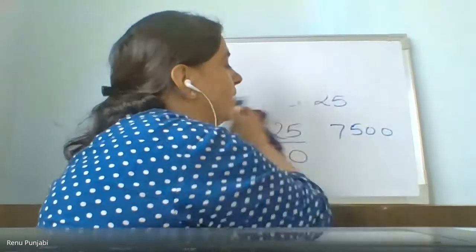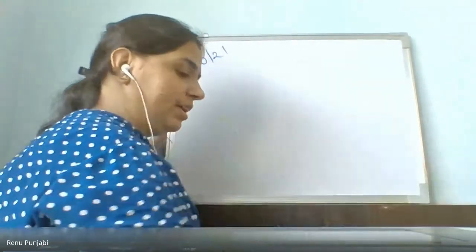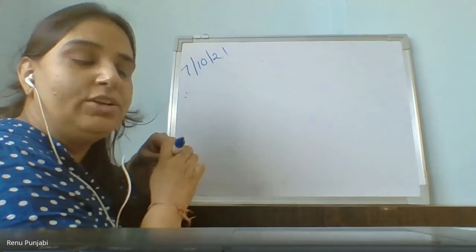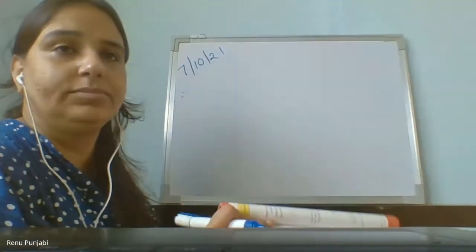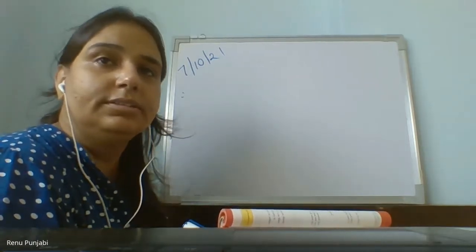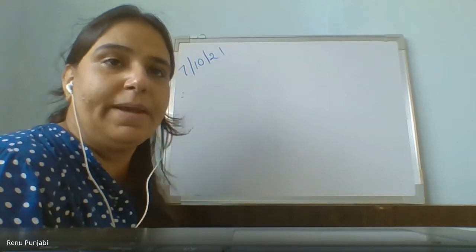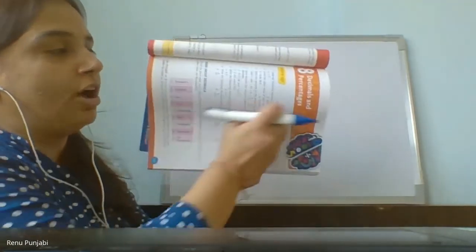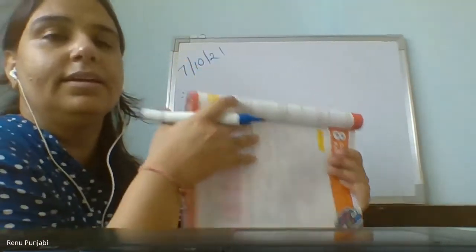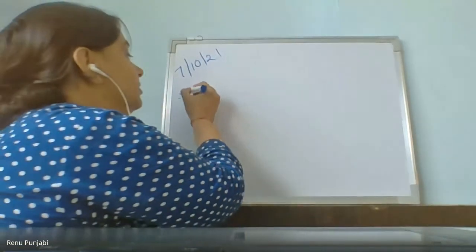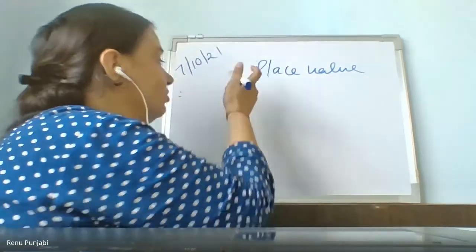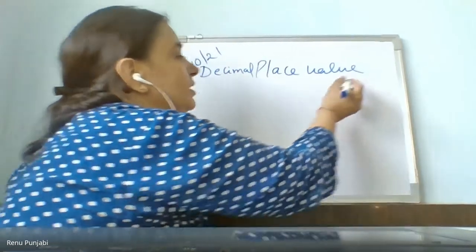So now we are going to learn about place value. Take out your notebook, take pencil in your hand, and draw the place value chart in your notebook. Make sure you understand what you draw. So take out your notebook, take pencil and eraser in your hand, and you will draw the decimal place value chart.